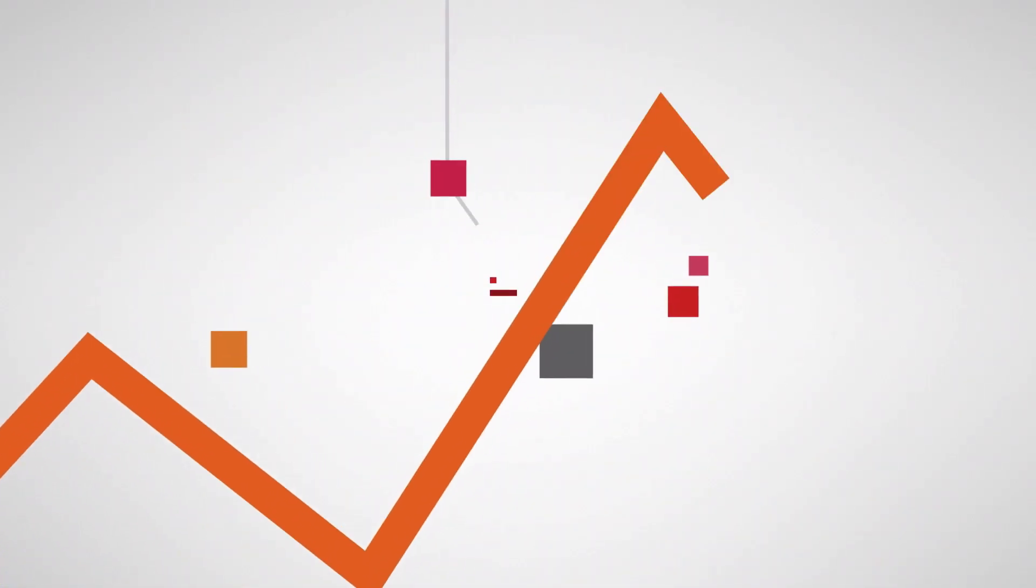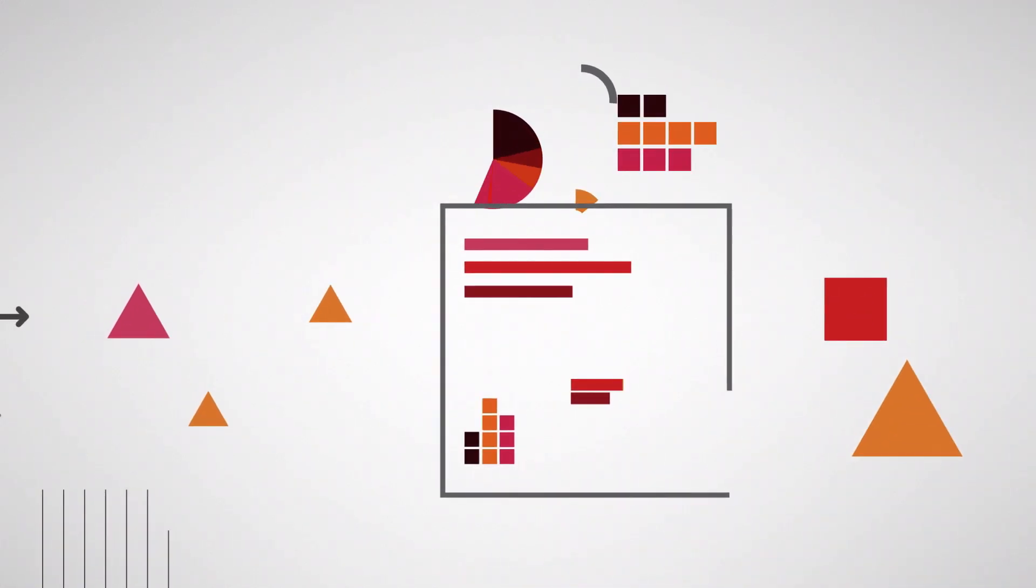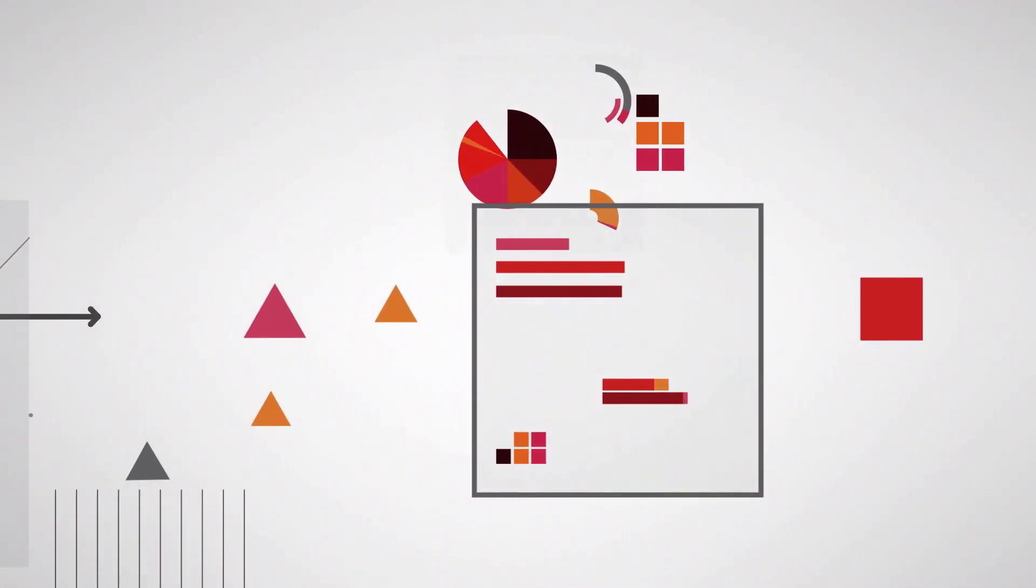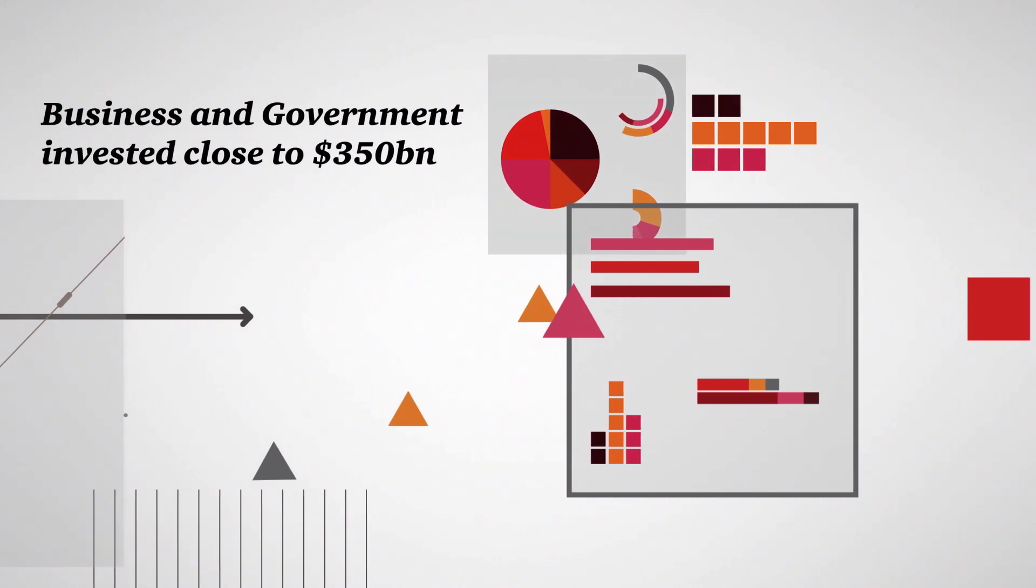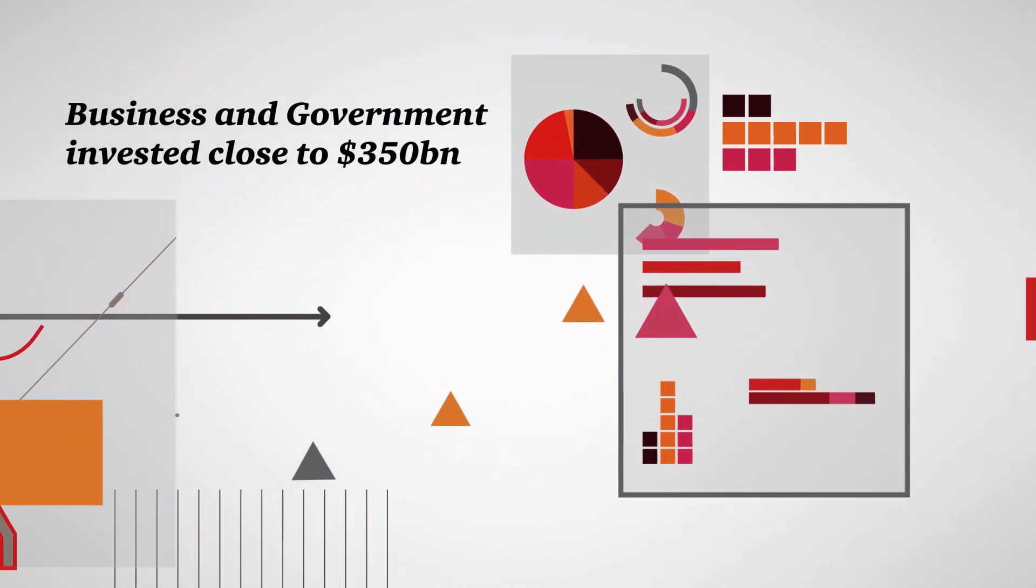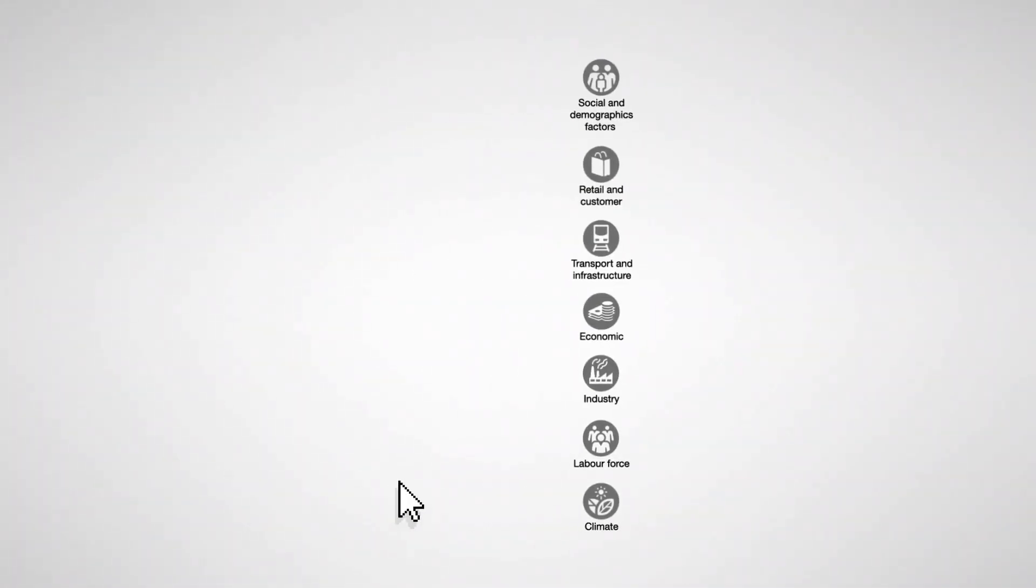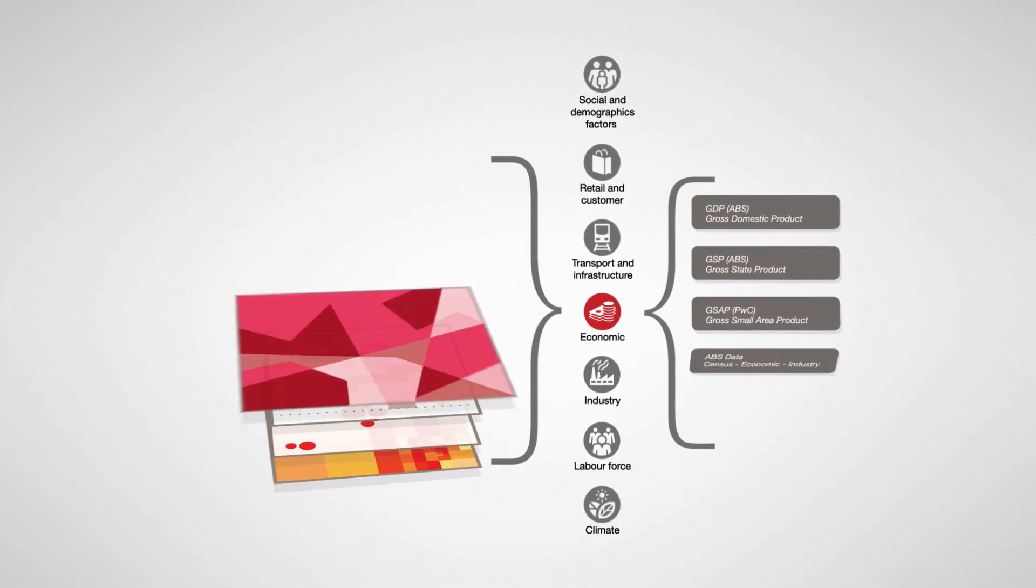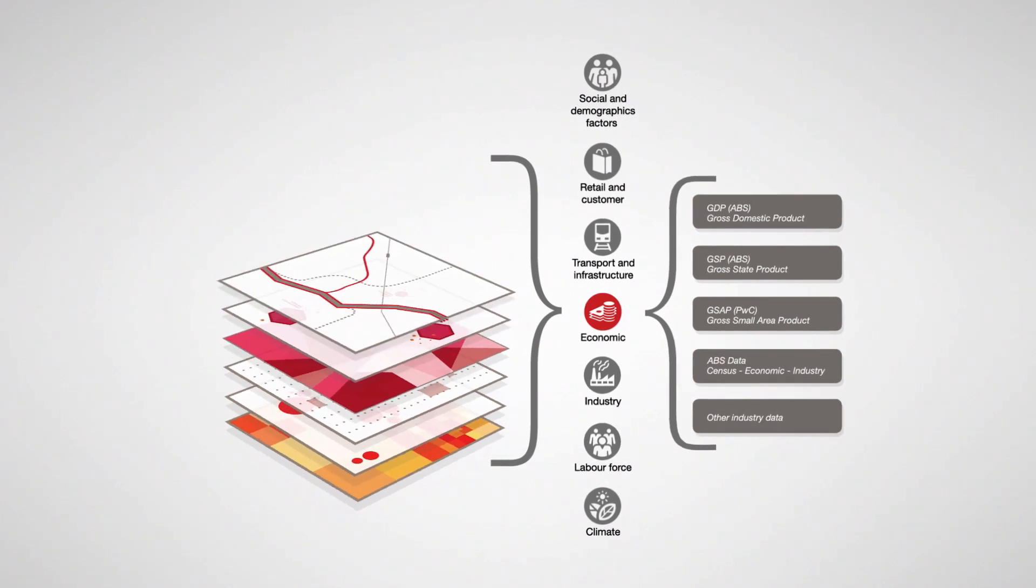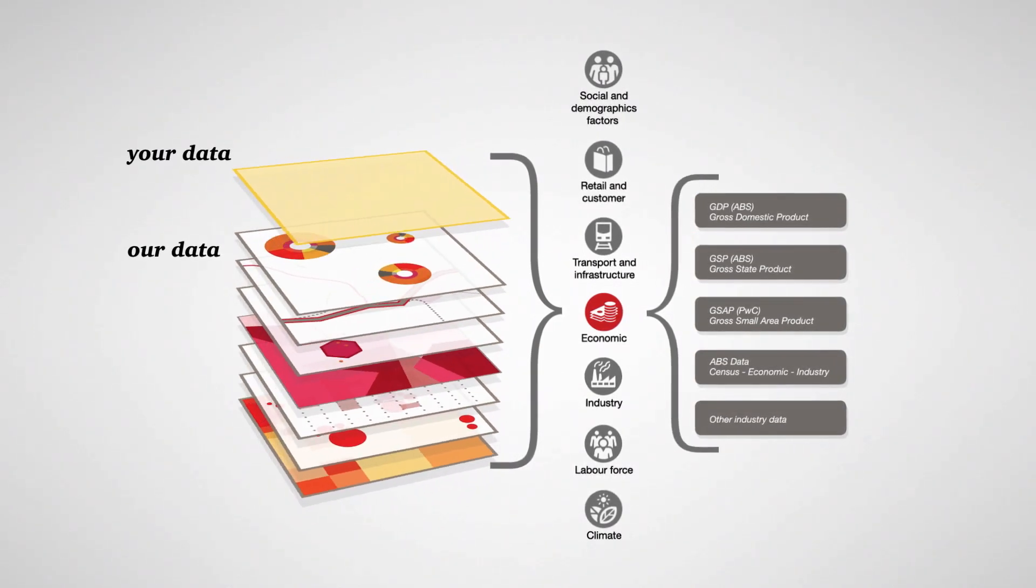Business and government continue to make critically important decisions about specific locations in a very uncertain economic environment. In fact, last year, business and government invested close to 350 billion dollars in specific locations within Australia. We improve the accuracy of these decisions with GEM, a lens that captures the inescapable macroeconomic, social and industry trends which shape our country.